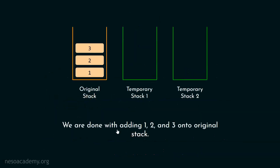We are done with adding 1, 2 and 3 onto the original stack. In the previous presentation, we learned how to push all these elements onto the original stack. The top most element of this stack is 3 and the bottom most element is 1. This is the current state of the original stack.